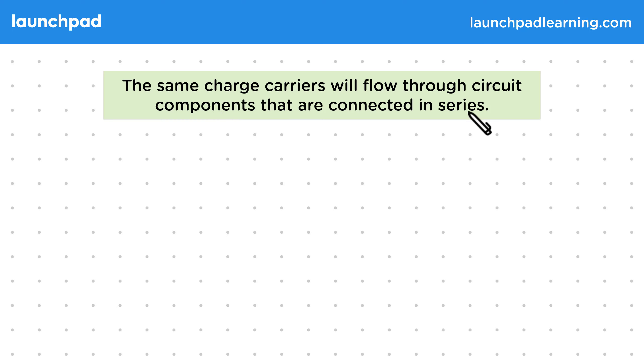Remember that current flows in circuits because delocalised electrons in the metal wires move around it. Let's take a look at a circuit similar to the one with three bulbs and consider the charge carriers in it.